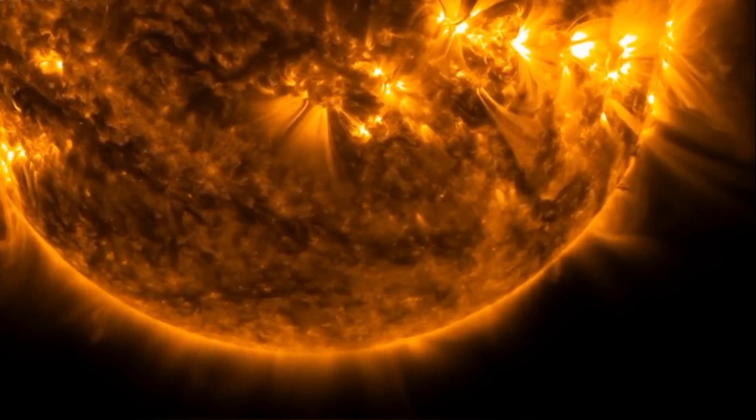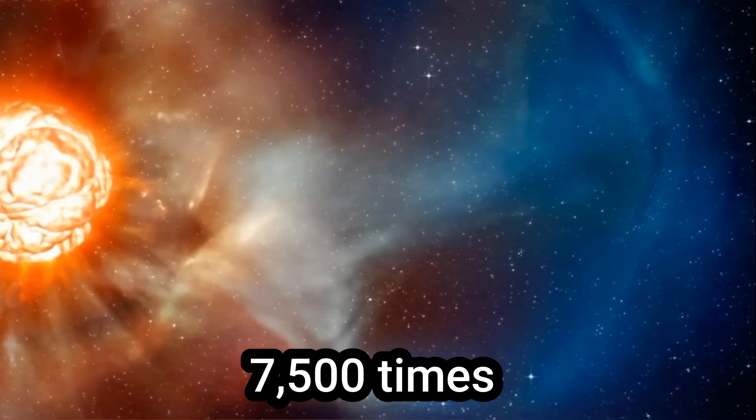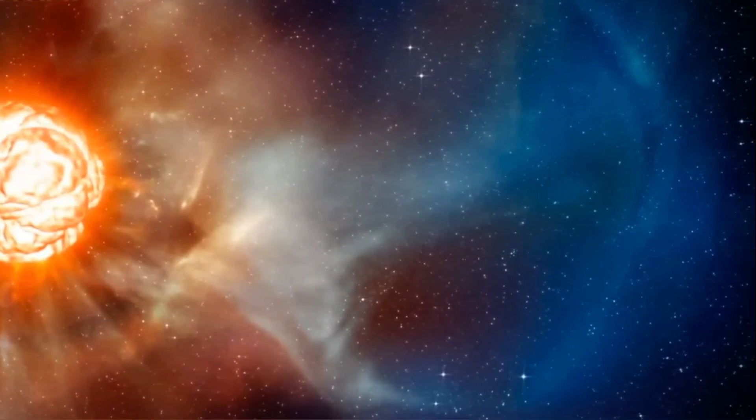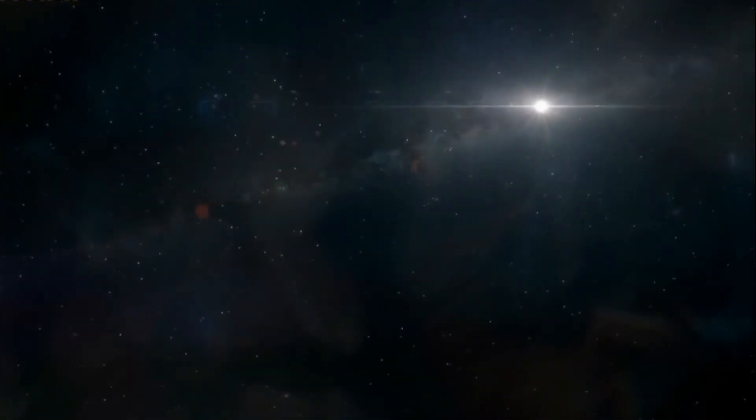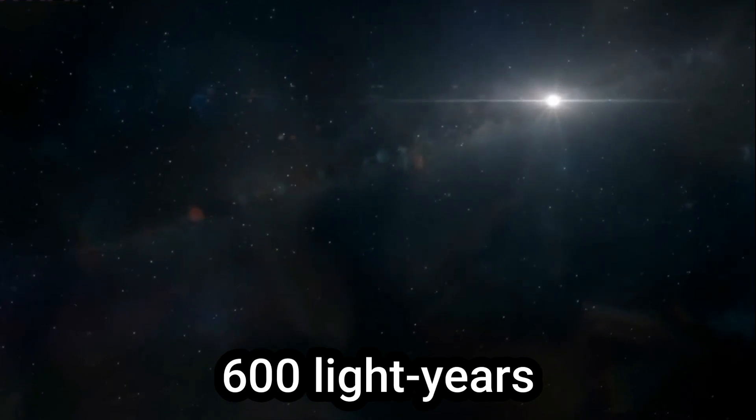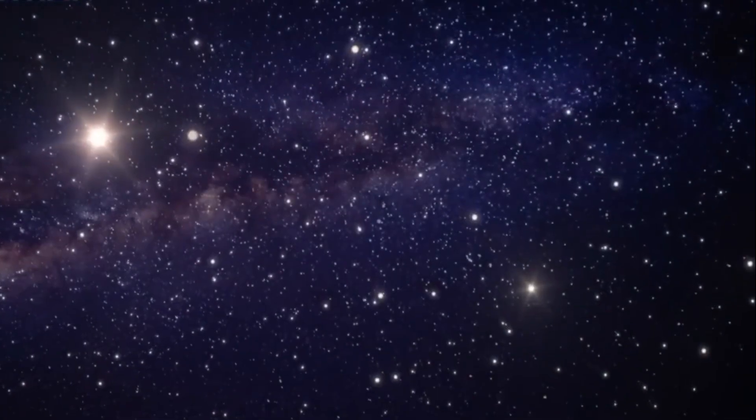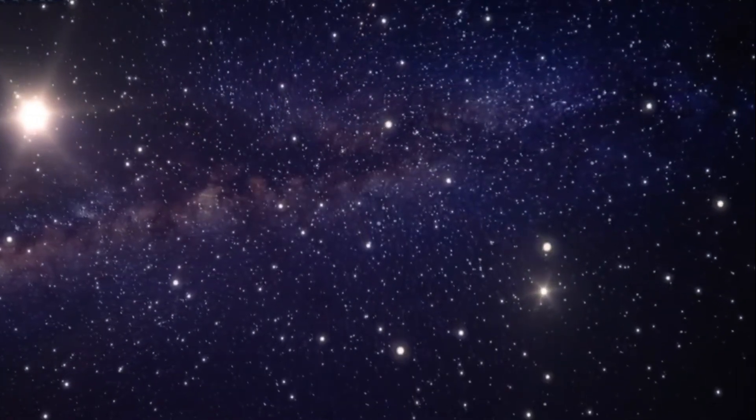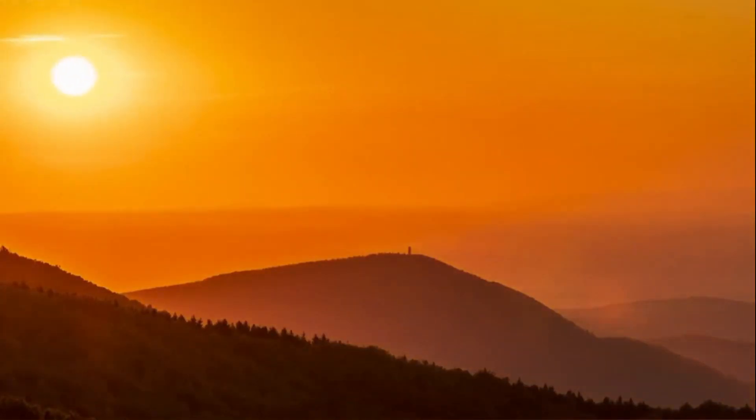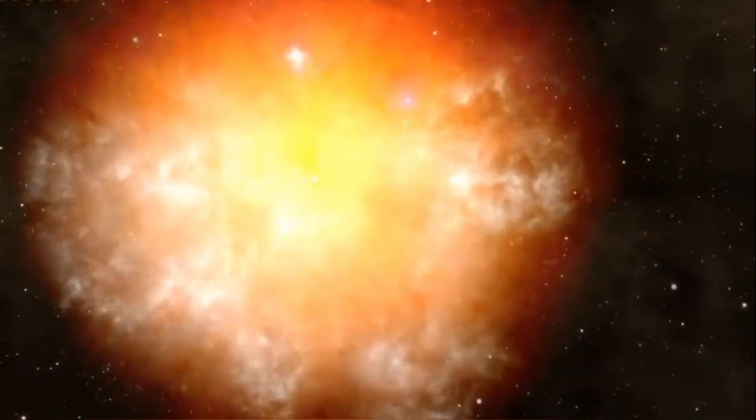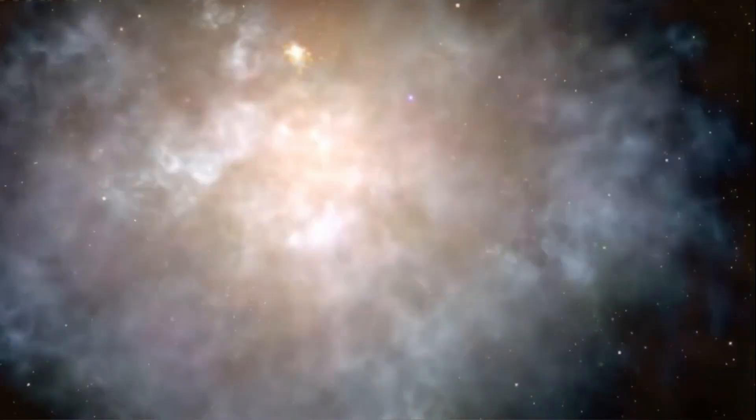Betelgeuse radiates a remarkable 7,500 times more energy than our sun. If it were closer to us, it might have been a formidable rival to our sun. However, due to its tremendous distance of 600 light years, it remains a distant marvel. To put things into perspective, our sun is just 8.3 light minutes away from Earth, making it highly effective for our planet. If Betelgeuse were a bit closer, we might even see it during the day. However, if it were to replace our sun, its massive size would likely engulf or displace Earth and the other nearby planets.